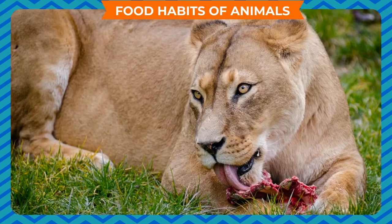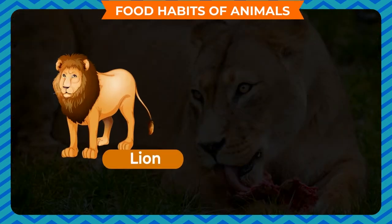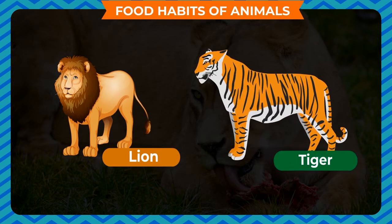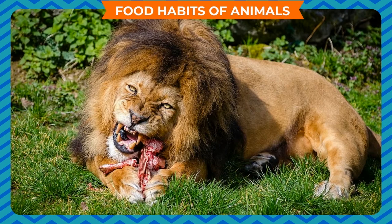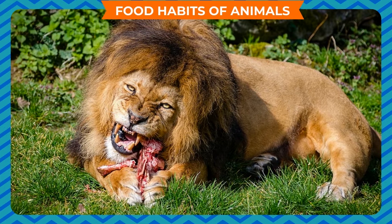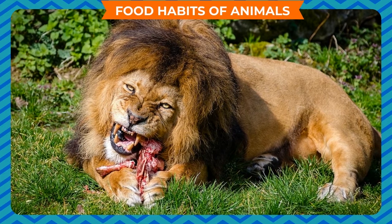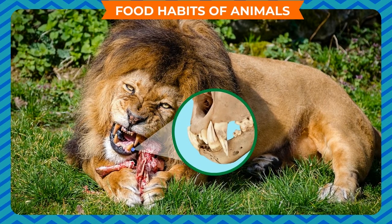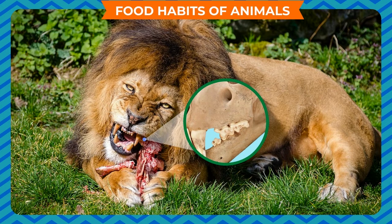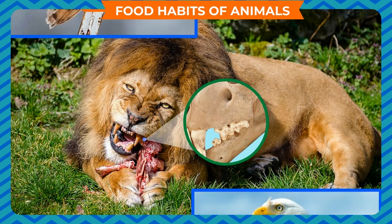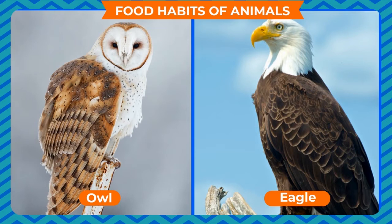Some animals such as lion and tiger eat the flesh of other animals. They are called carnivores. Carnivores have sharp and pointed front teeth to tear the flesh of animals and strong back teeth for chewing it.